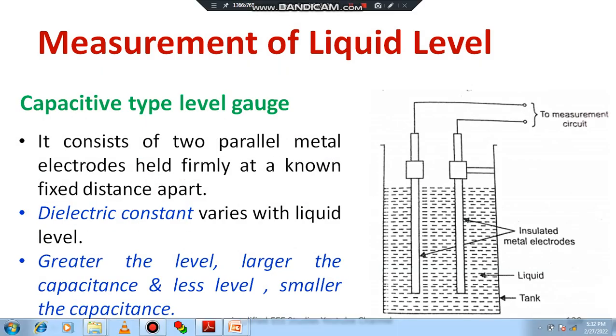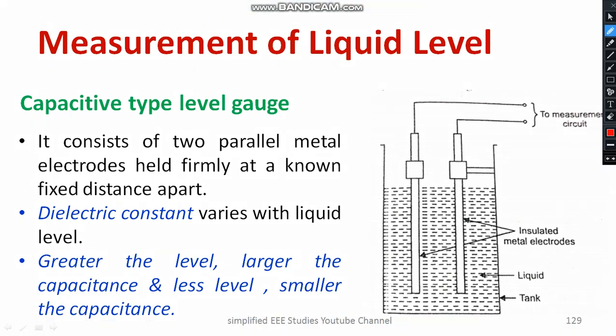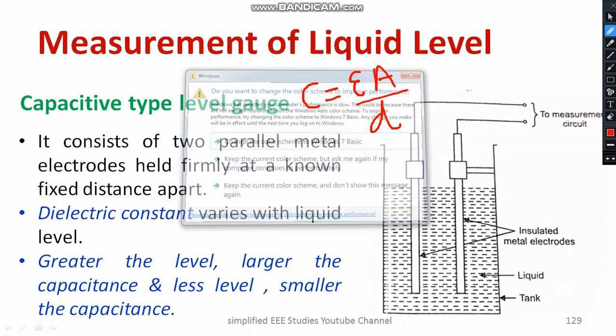First, I am going to talk about the capacitive type liquid level gauge. The capacitance is equal to epsilon times A divided by d. Capacitance is directly proportional to epsilon, which is the permittivity of the medium. Capacitance is directly proportional to the dielectric constant, or permittivity, which is the product of relative permittivity and absolute permittivity. If the value of the dielectric constant is high, the capacitance will also be very high.